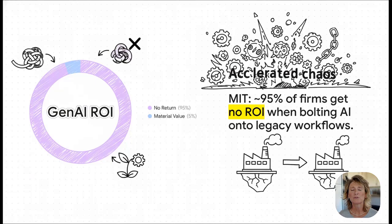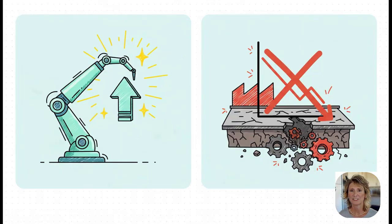This research from MIT is just wow. They found that when you bolt generative AI onto these old legacy systems, a staggering 95% of companies see absolutely no business return. Only a tiny 5% managed to squeeze out any real value.